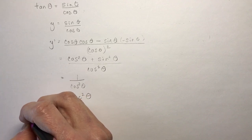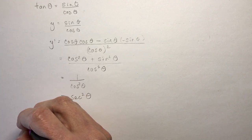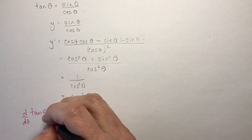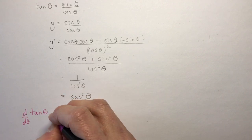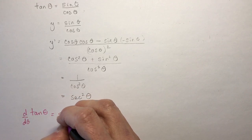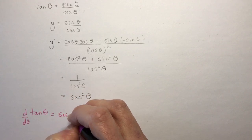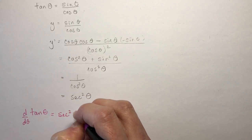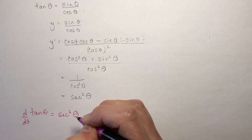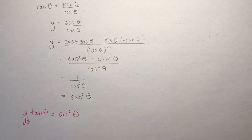The derivative of tan θ is secant squared θ.